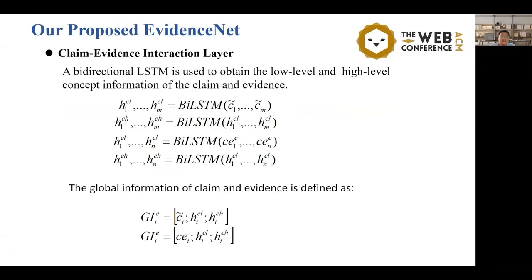Claim-evidence interaction layer. This layer mainly consists of three processes, namely the global information generation, a gating mechanism which removes redundant information in evidence sentences, and a symmetric interaction and attention mechanism which captures different interactions between claim and evidence. In our work, we enrich the embeddings of the claim and evidence through the modeling process. A single bidirectional LSTM is used to capture the low-level and high-level concepts of the claim and evidence. After obtaining the low-level and high-level concepts of the claim and evidence, the global information is defined.